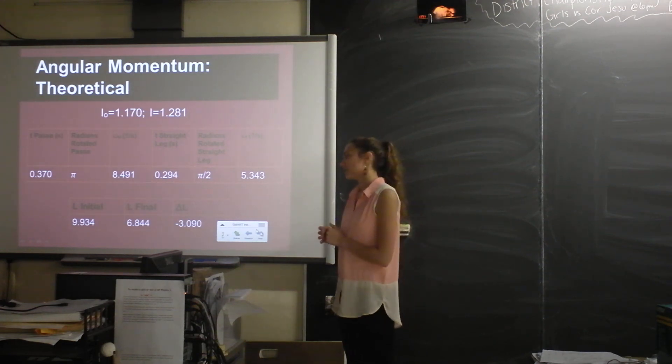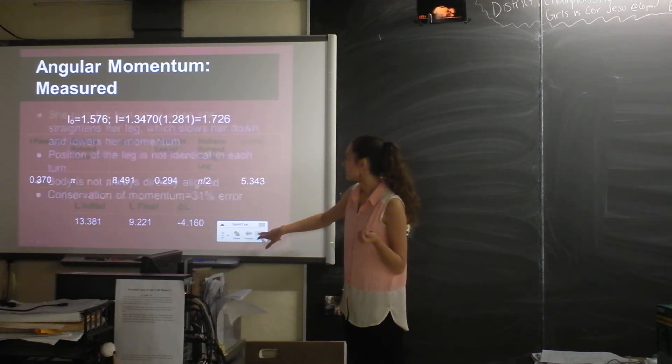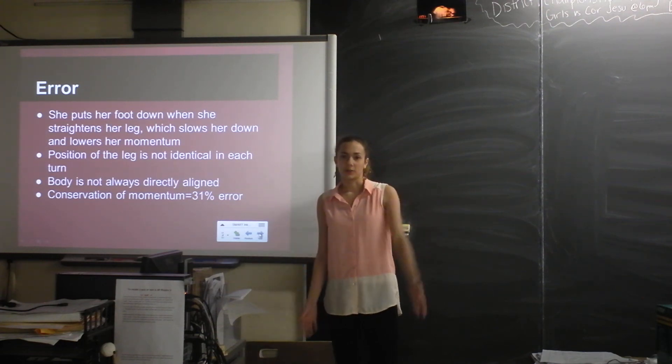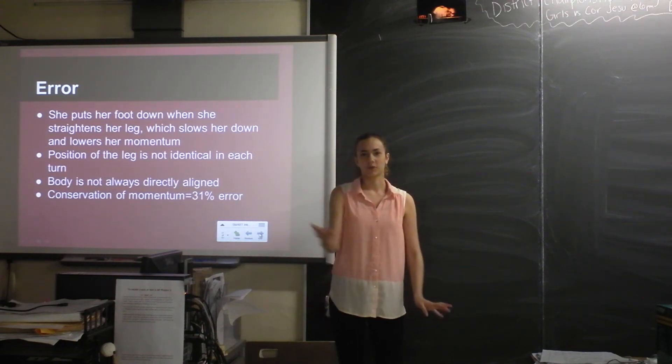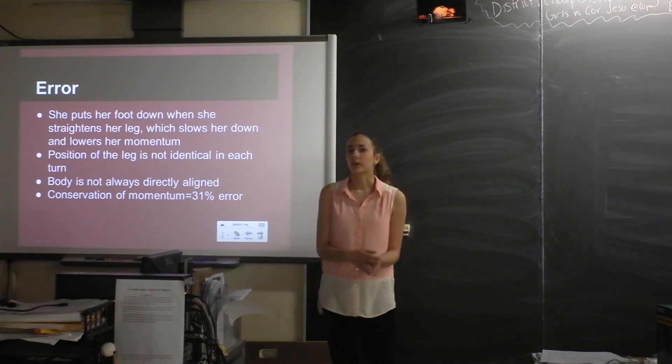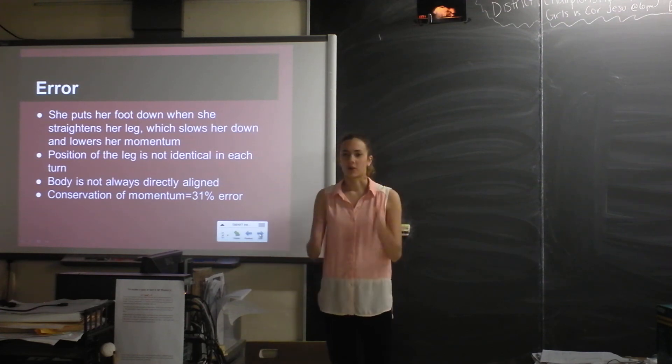And then I found that she lost about 3.09% of her momentum. This was just one example. And I think on average it ended up being about 26%. So I attributed that to the fact that she's putting her foot down and actually losing some of her momentum and she's stopping her foot because she was only continuing the angular momentum through her leg. But other sources of error for moment of inertia would be that the position is not identical in every turn and that her body is not always centered around the axis of rotation, which I kind of assumed that it was.